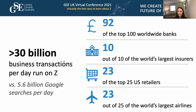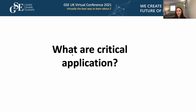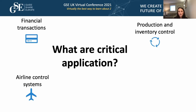Every day over 30 billion business transactions are running on mainframes. To put that in comparison, there are around 5.6 billion Google searches per day — and there are even more transactions running on mainframes. Most of the top banks use mainframes, most insurance companies, a lot of retailers, and a lot of airlines. The critical applications running on mainframes include things like financial transactions, airline control systems, production and inventory control, and payroll — applications which always need to be available and deal with very sensitive data.